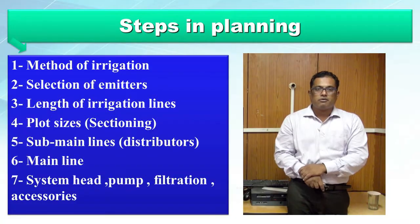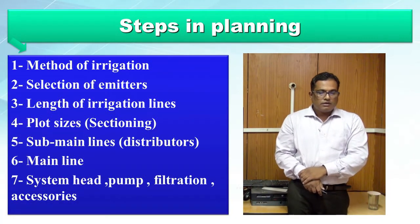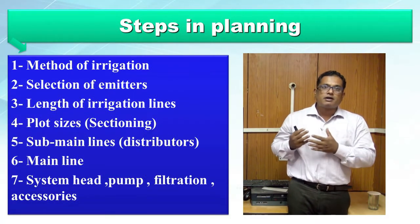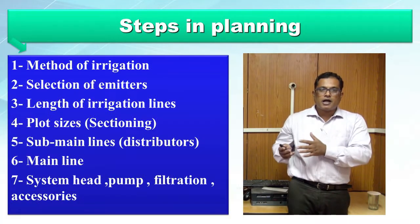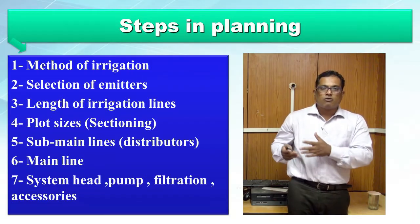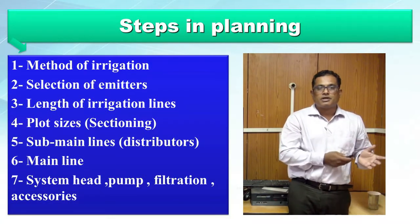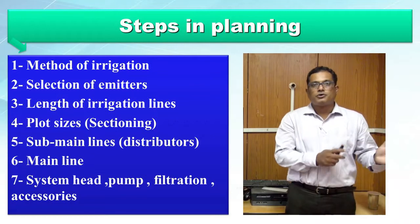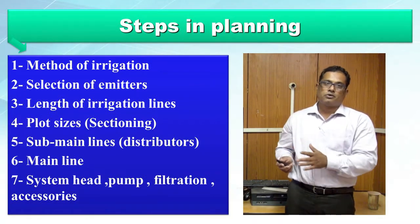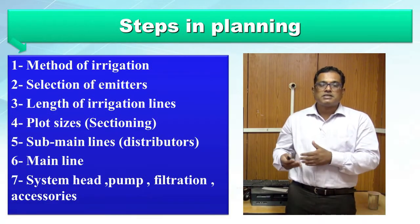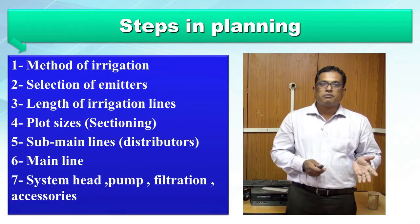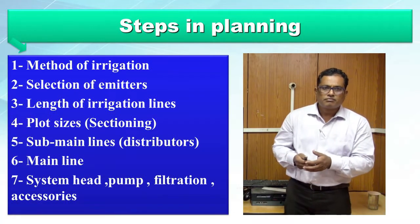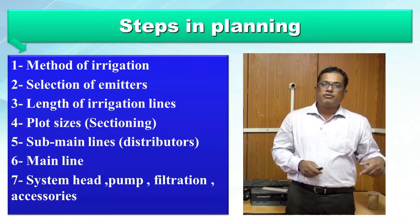The first step in planning a drip irrigation system is to understand our requirements: what crop is being grown, what type of water source is available, and what is the quality of that water. Accordingly, we decide on the method of irrigation. For closely growing cereal crops, pulses, or oilseed crops, sprinkler irrigation is preferred. For vegetables, fruits, ornamental, or medicinal crops, drip irrigation is suitable.